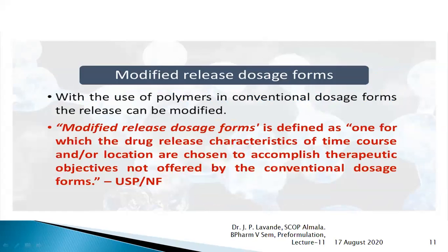We can modify the release of dosage forms using polymers. With the use of polymers in conventional dosage forms, the release can be modified. Such dosage forms are called modified release dosage forms, defined as those for which the drug release characteristics of time, course, and/or location are chosen to accomplish therapeutic objectives not offered by the conventional dosage form.